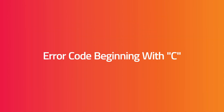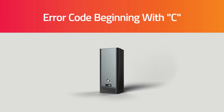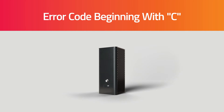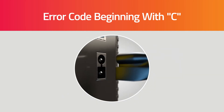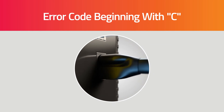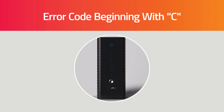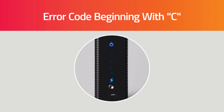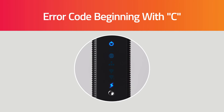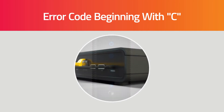An error code that begins with the letter C signifies a home network issue. The first thing you should do is power cycle your modem. Unplug the power cord for 10 seconds and then plug it back in. Once the modem is back online, you'll also need to power cycle the TiVo box that's giving the error. Simply unplug the device from power for 10 seconds and plug it back in.